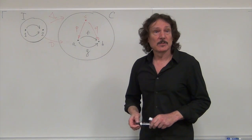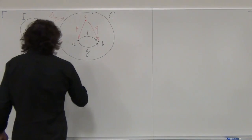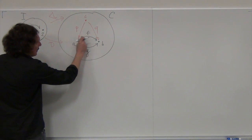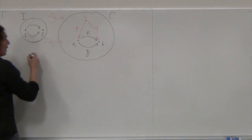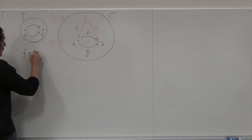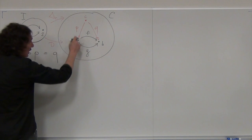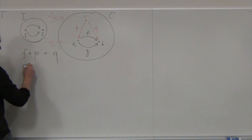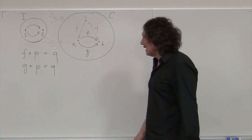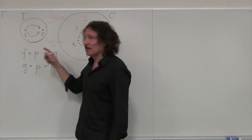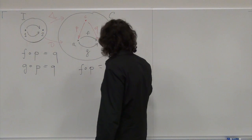The commuting condition — the faces of these two triangles — requires: this triangle has to commute, so P followed by F must be the same as Q. The other triangle is: G after P must also equal Q. So there are two commutation conditions. We can eliminate one and say Q is given by F after P, so the real condition is that F after P must equal G after P.